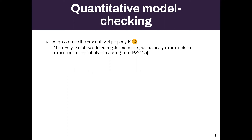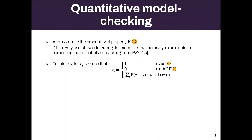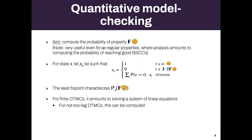I want to compute the probability of some property in a denumerable Markov chain. We can characterize the probability of reaching a state: if I'm at the target, the probability is one; if I can no longer reach it, the probability is zero; otherwise, I have a linear combination over successors. The probability of reaching the target from S equals the probability of going to some state T, then reaching the target. The least fixed point of this kind of equation characterizes the reachability probability.